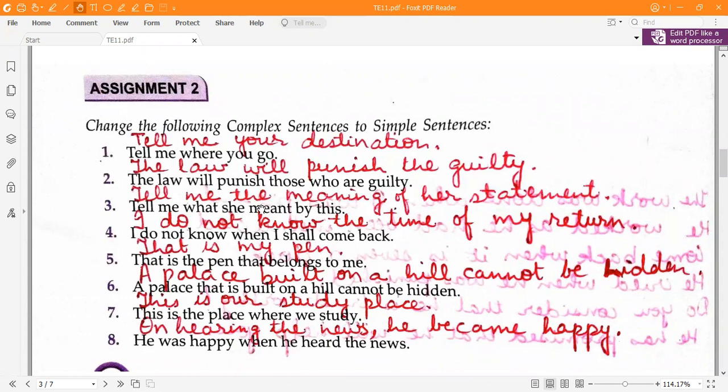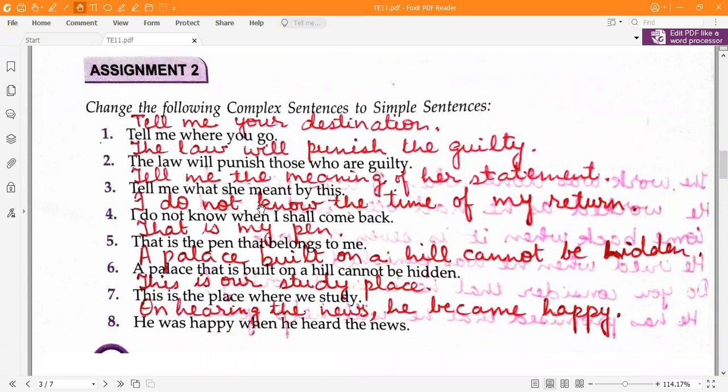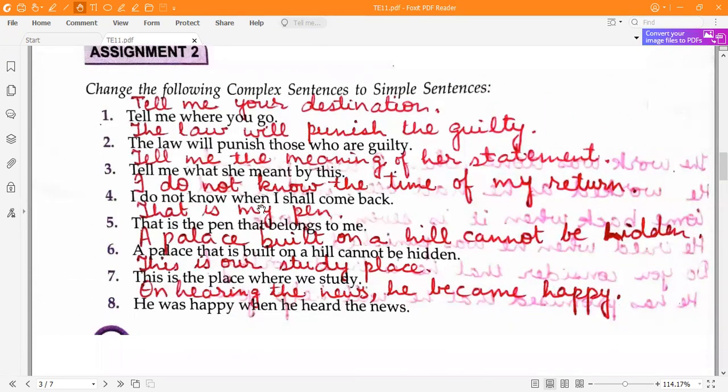Third one, tell me what she meant by this. Tell me the meaning of her statement. Fourth one, I do not know when I shall come back. I do not know the time of my return. Fifth one, that is the pen that belongs to me. That is my pen.